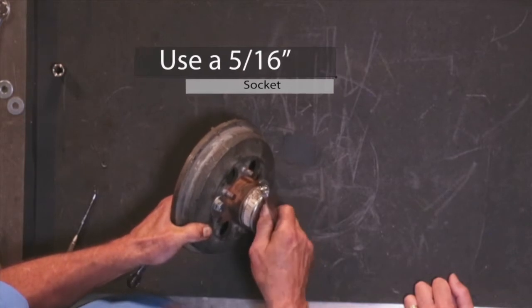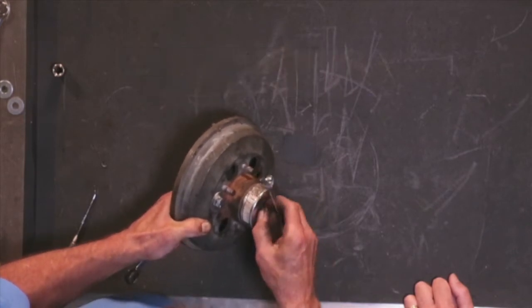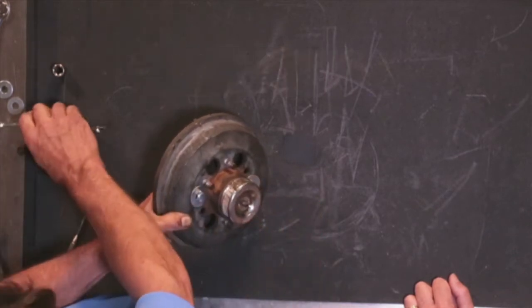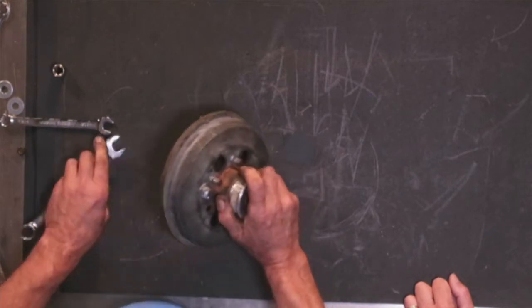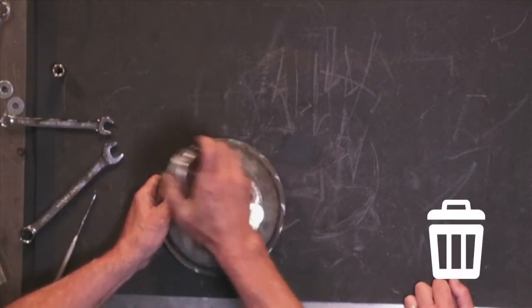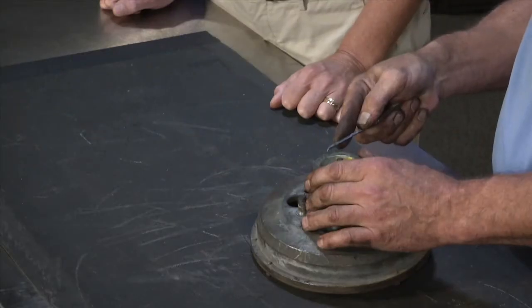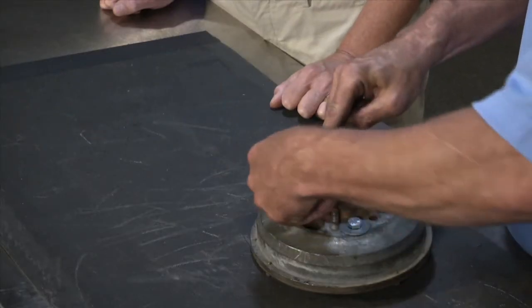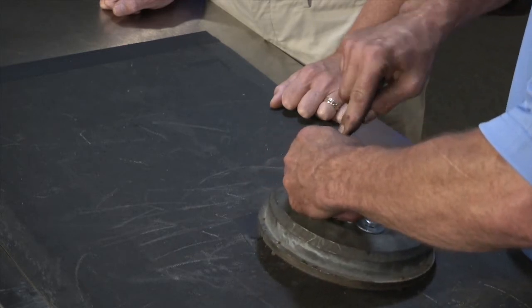Next, remove the air chamber cap using a 5/16th socket. You can discard the air chamber cap. Remove the U-packing seal, which will either be black or blue. If it is blue, you also need to remove and discard the O-ring underneath the U-packing seal.